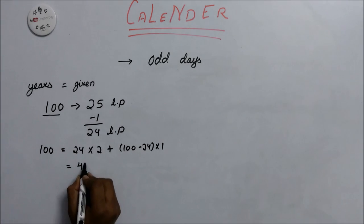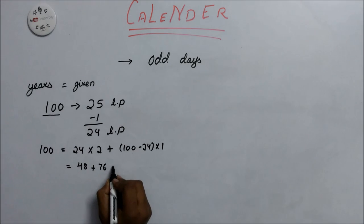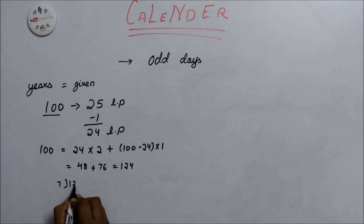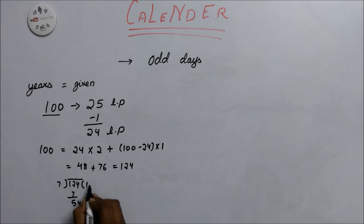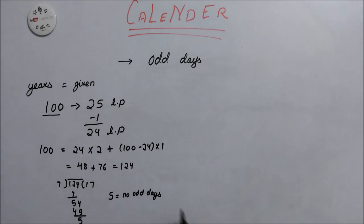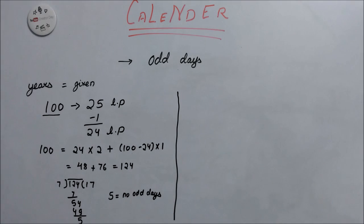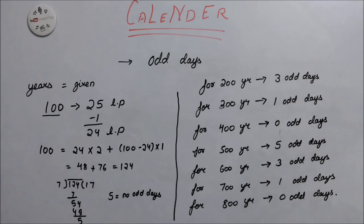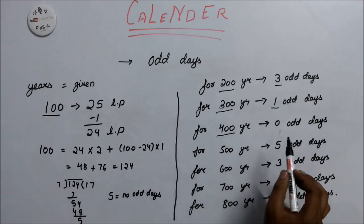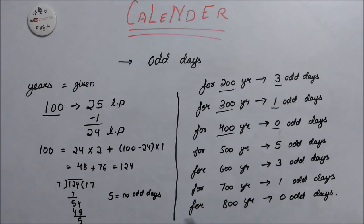We get 48 plus 76 which equals 124. Dividing 124 by 7 gives remainder 5. So 5 is the number of odd days in 100 years. Using this method: 200 years gives 3 odd days, 300 years gives 1 odd day, and 400 years gives 0 odd days. After 400 years, the pattern repeats.